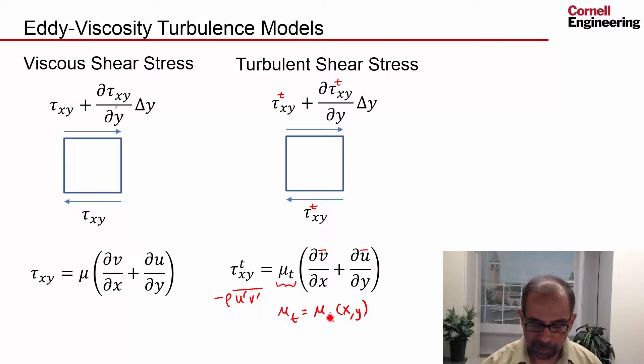The other thing to keep in mind is the physical reasoning, a hand-waving physical reasoning for writing this expression. You say that the molecular viscosity comes from the exchange of momentum between adjacent layers due to molecular motion.